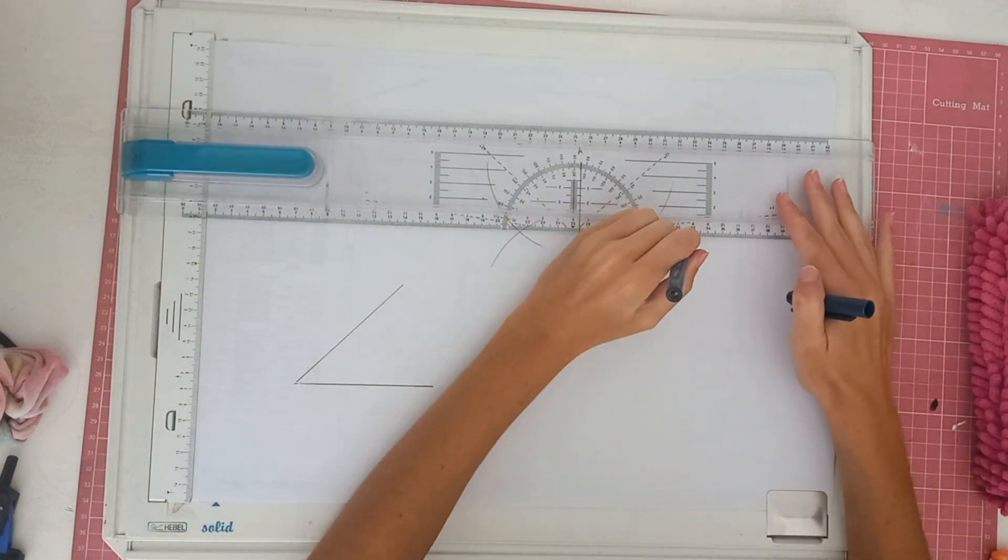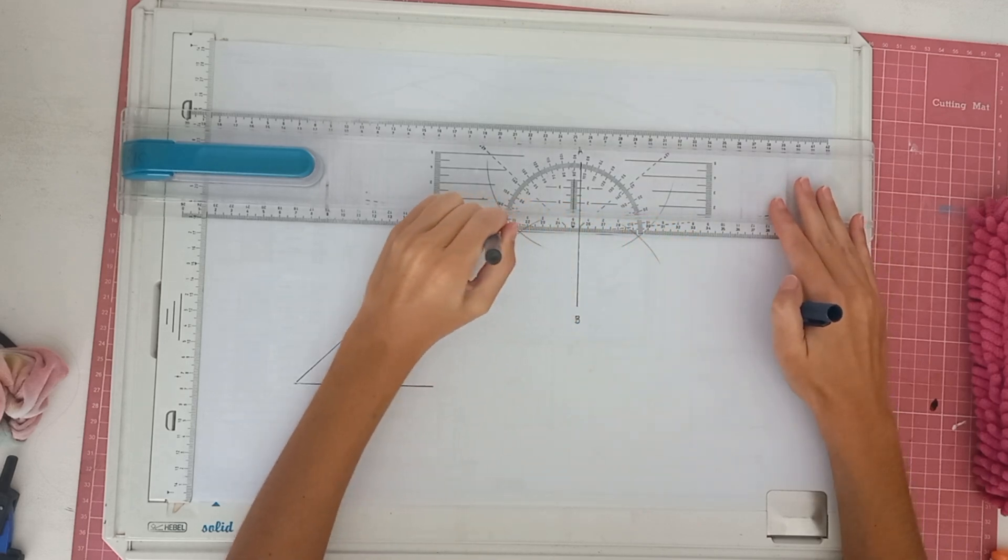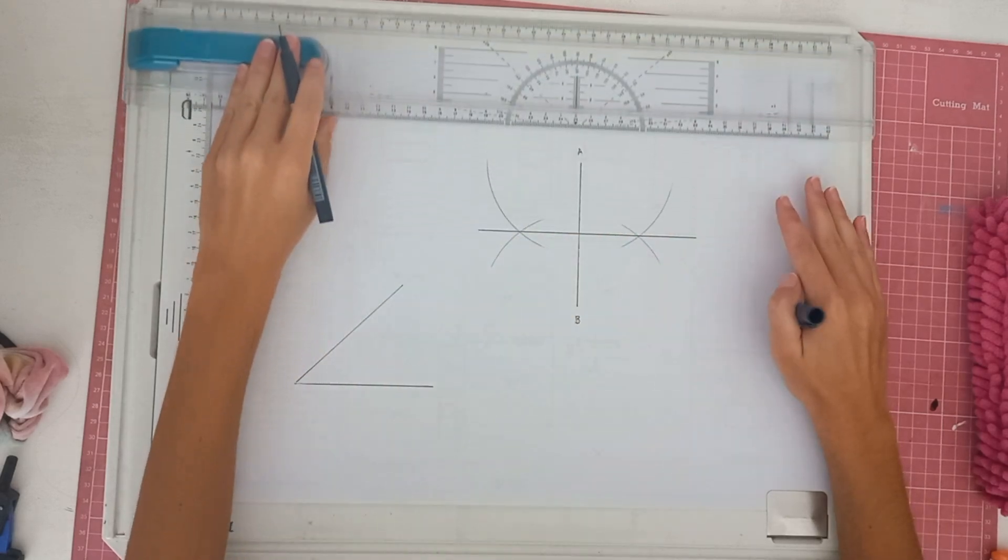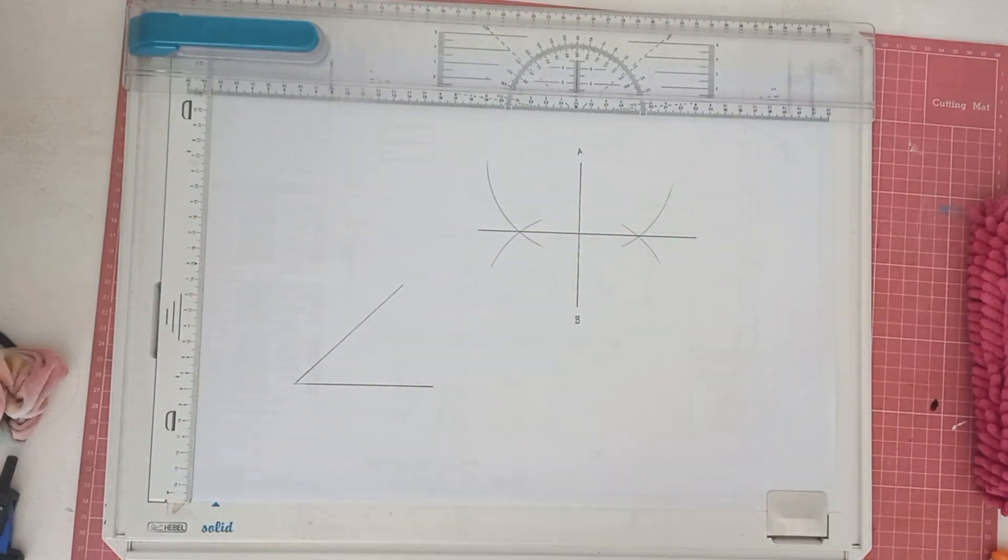Once you have got your crisscrosses you are going to draw a line going through the center just like this over here and that is how you bisect your line. Bisecting obviously means breaking it into half.